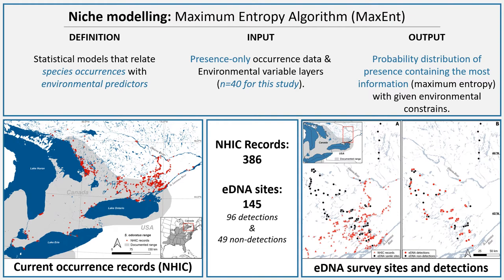For this study, we applied a niche modeling tool called maximum entropy algorithm, in short Maxent. It tries to statistically relate species occurrences with environmental predictors across the landscape. It requires presence-only occurrence data and environmental variable layers to build the model. For this study, we compiled 40 different environmental predictors. From the output of the models, it predicts the probability distribution of the presence of our turtle given environmental constraints.